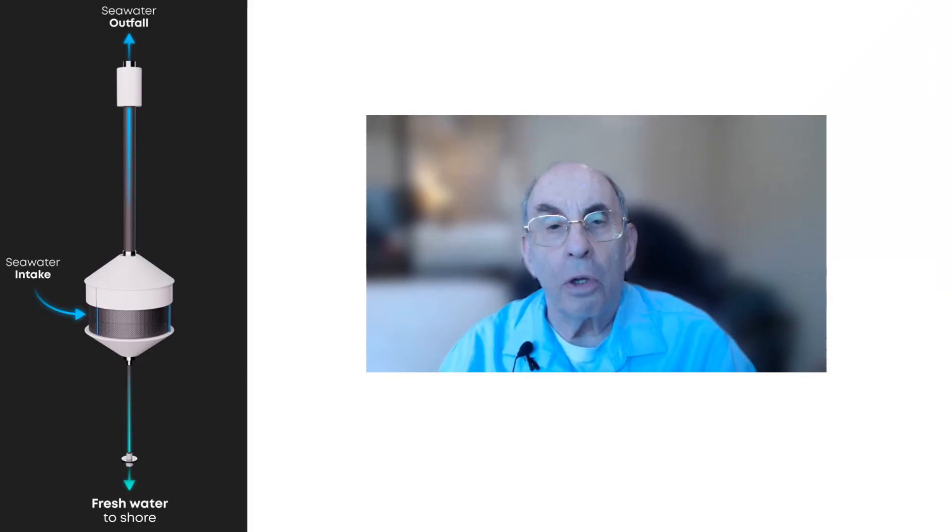This image shows a schematic of a single deep ocean desalination pod that the Ocean Well Company is developing. The pod draws in seawater through a fine screen that keeps out large aquatic life, but not the phytoplankton that's abundant at these depths. The pod contains a reverse osmosis membrane, and hydrostatic pressure forces about 10-15% of the incoming seawater through the membrane to produce fresh water that then is pumped to shore.